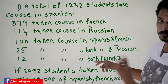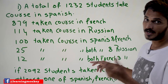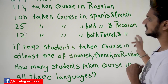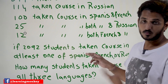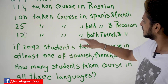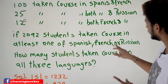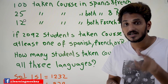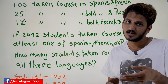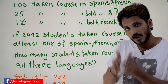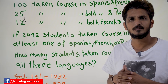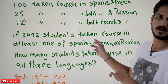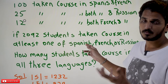25 students have taken courses in both Spanish and Russian, so A intersection C is 25 elements. 12 students have taken courses in both French and Russian. If 2092 students have taken at least one of Spanish, French, or Russian — 'at least one' means Spanish union French union Russian — the number of elements in A union B union C is 2092.